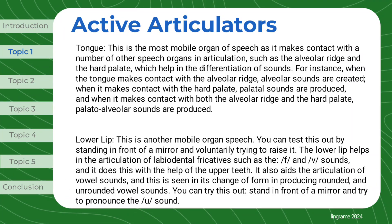The tongue is the most mobile organ of speech as it makes contact with a number of other speech organs in articulation, such as the alveolar ridge and the hard palate, which help in the differentiation of sounds. For instance, when the tongue makes contact with the alveolar ridge, alveolar sounds are created. When it makes contact with the hard palate, palatal sounds are produced. And when it makes contact with both the alveolar ridge and the hard palate, palato-alveolar sounds are produced.